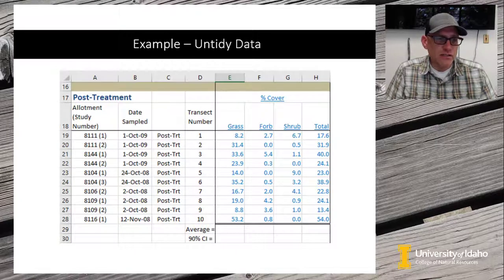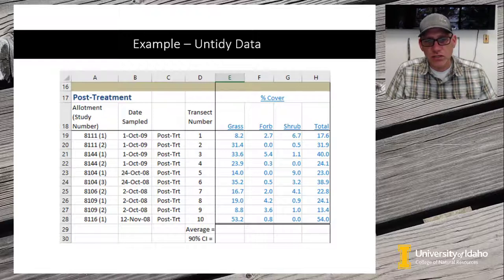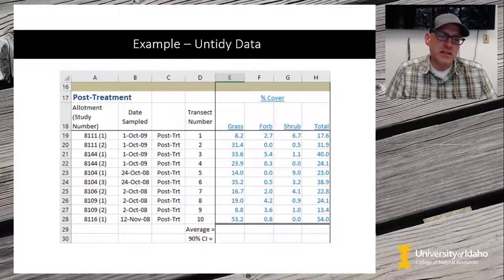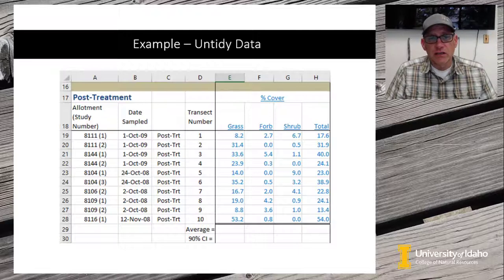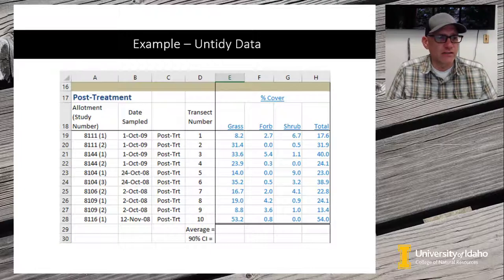This data set is also missing a column header, and there are line spaces between the post-treatment data and the pre-treatment data above it on the spreadsheet. There's a bunch of things going on here that make these data visually kind of nice to look at, but from an analysis standpoint it could be simplified to make it easier to grab the data that we need.